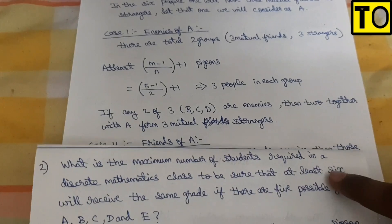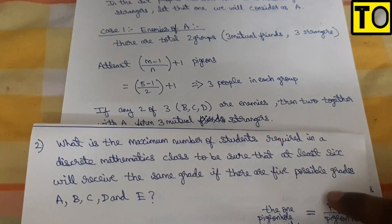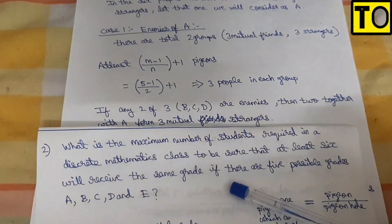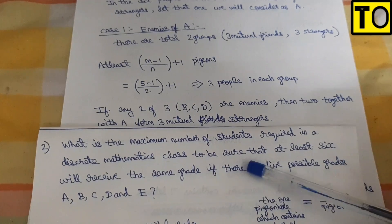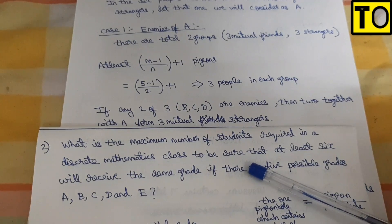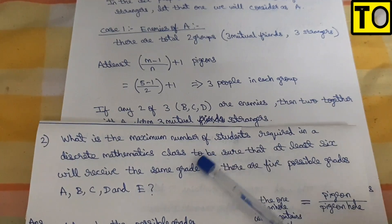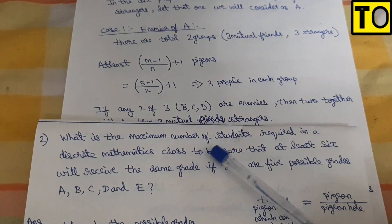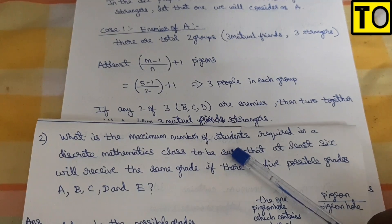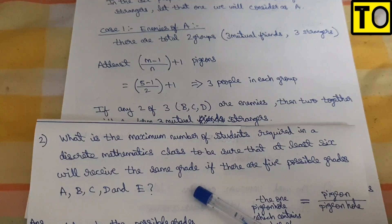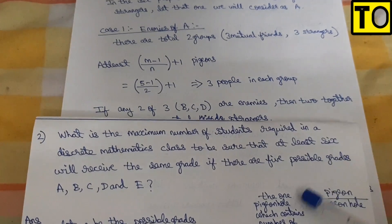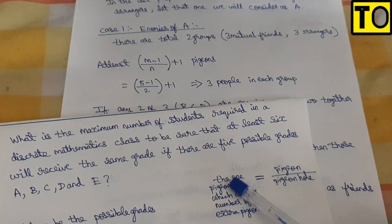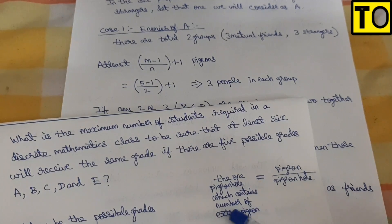What is the maximum number of students required in a Discrete Mathematics class to be sure that at least 6 will receive the same grade, if there are 5 possible grades: A, B, C, D, E? That is the formula for the Pigeon Hole Principle — the one pigeon hole that contains the number of extra pigeons.